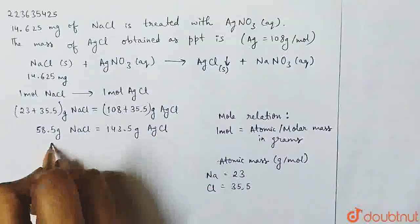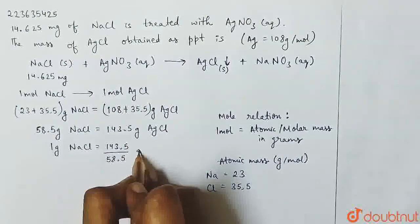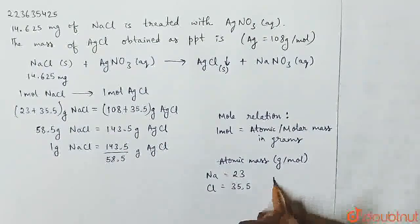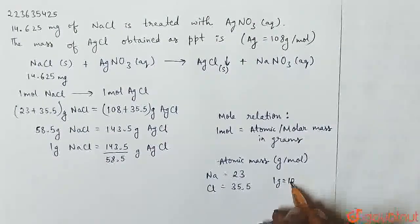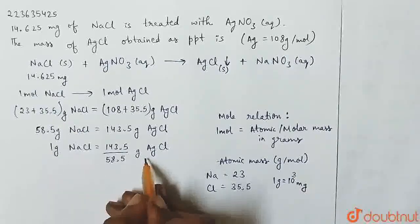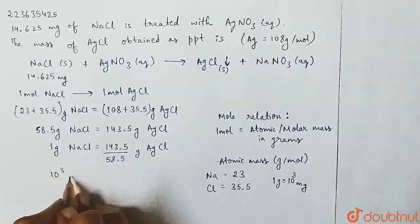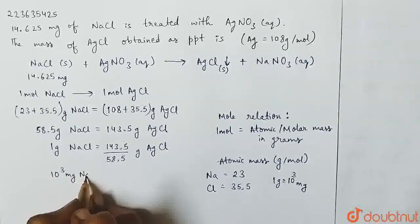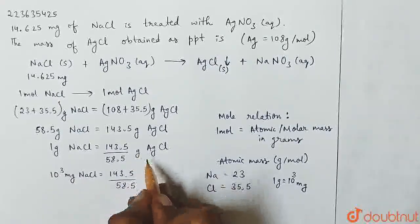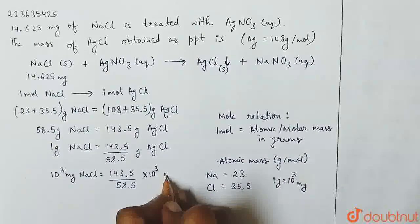So if we get 1 gram, then 1 gram NaCl will form 143.5 divided by 58.5 gram AgCl. 1 gram equals 10 raised to the power 3 milligrams. So 1 gram NaCl is equivalent to 143.5 divided by 58.5 times 10 raised to the power 3 milligrams AgCl.